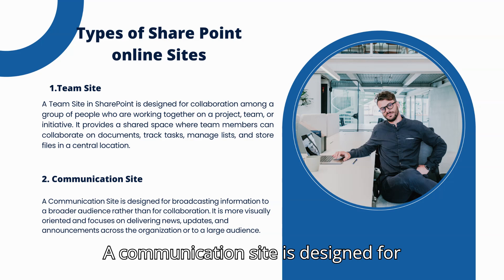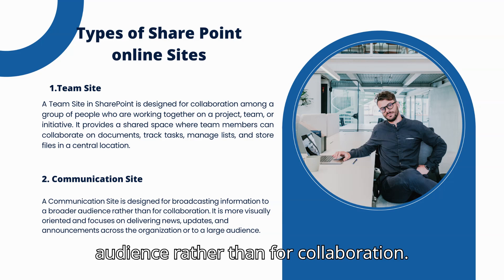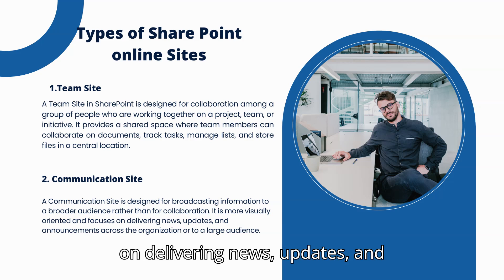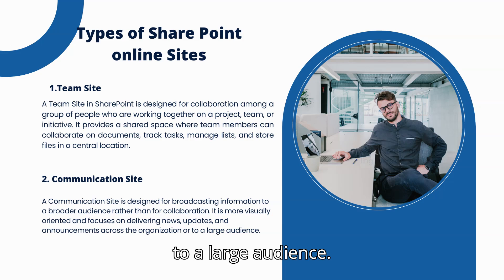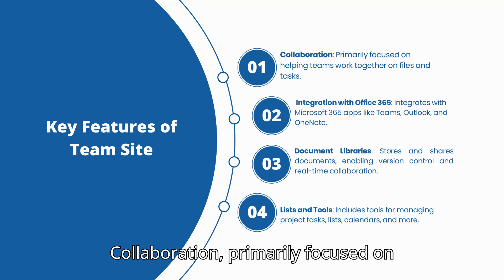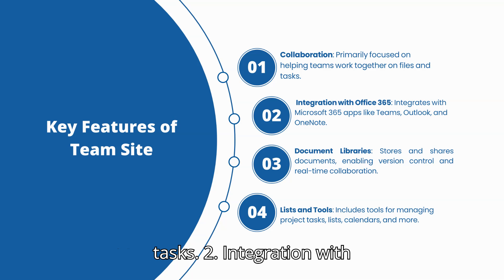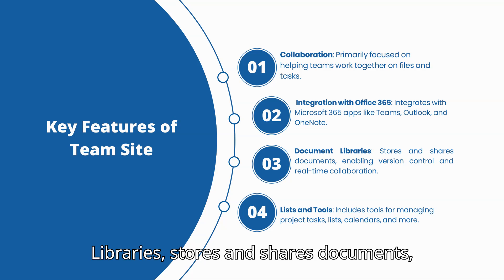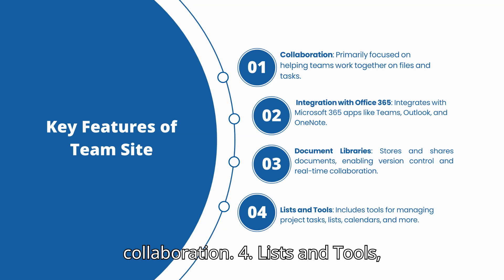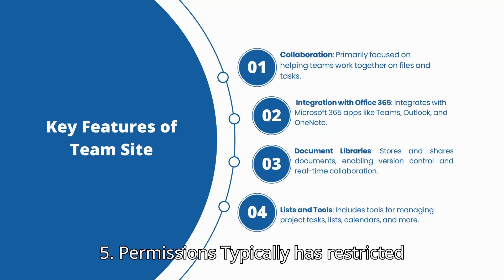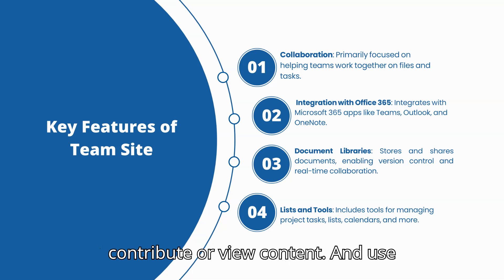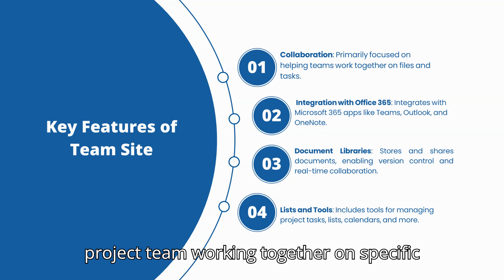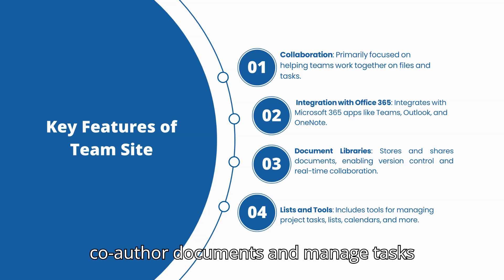A communication site is designed for broadcasting information to a broader audience rather than for collaboration. It is more visually oriented and focuses on delivering news, updates, and announcements across the organization or to a large audience. Key features of a team site: 1. Collaboration — primarily focused on helping teams work together on files and tasks. 2. Integration with Office 365 — integrates with Microsoft 365 apps like Teams, Outlook, and OneNote. 3. Document libraries — stores and shares documents, enabling version control and real-time collaboration. 4. Lists and tools — includes tools for managing project tasks, lists, calendars, and more. 5. Permissions — typically has restricted access where only team members can contribute content. Use case: ideal for a project team working together on specific deliverables, where members need to co-author documents and manage tasks collectively.